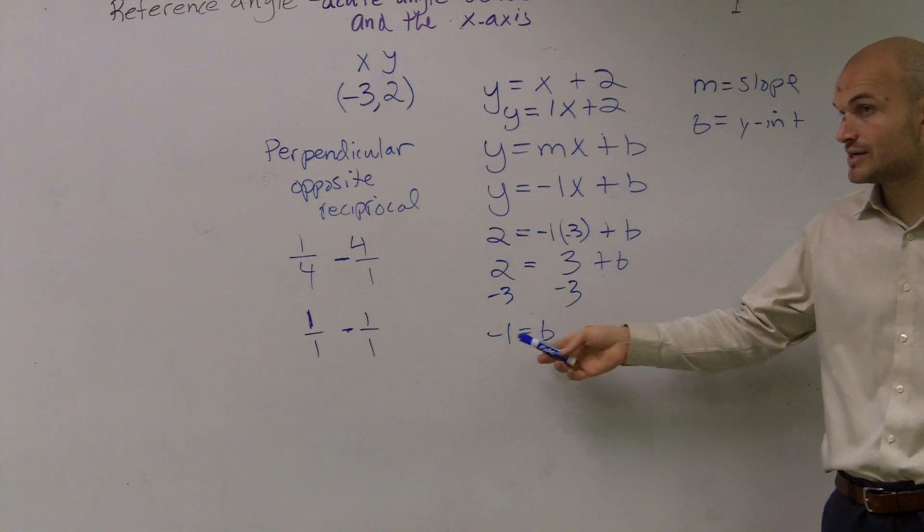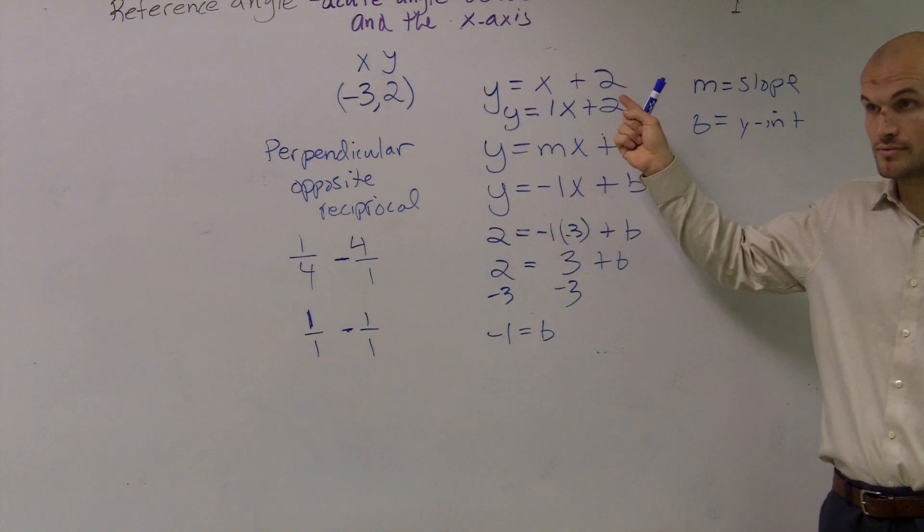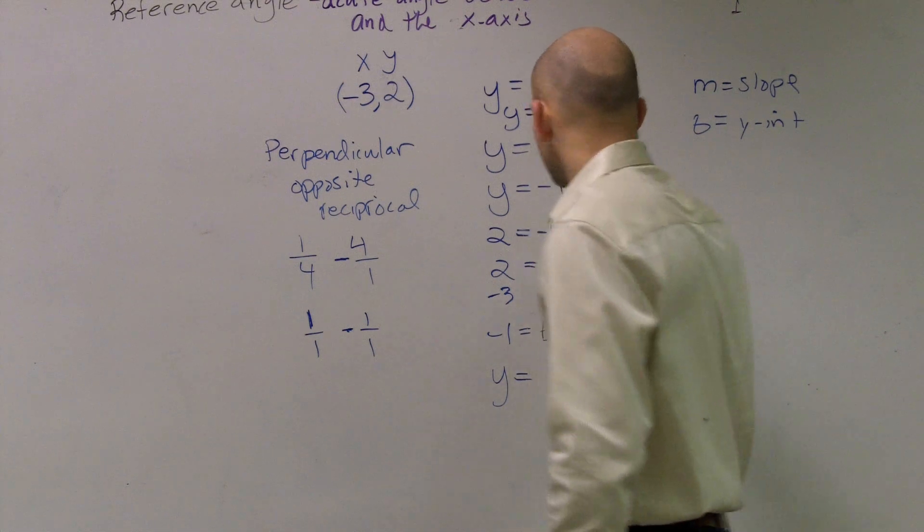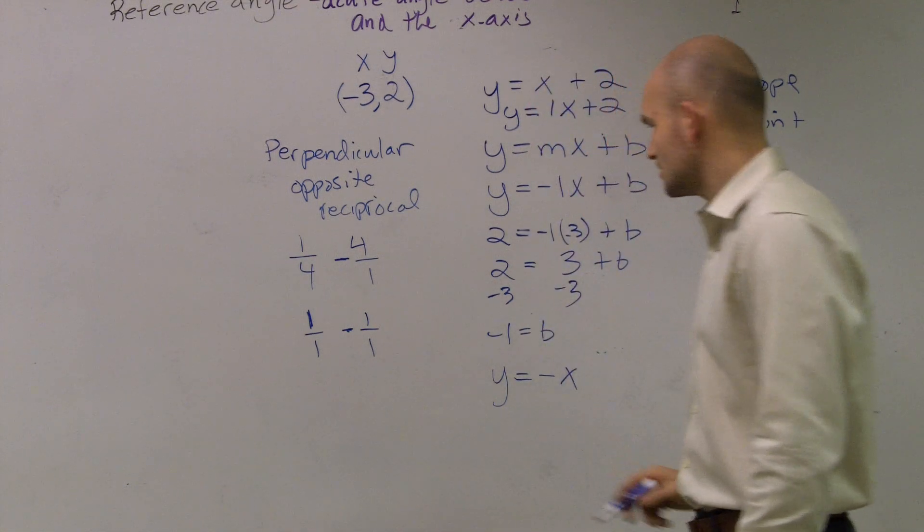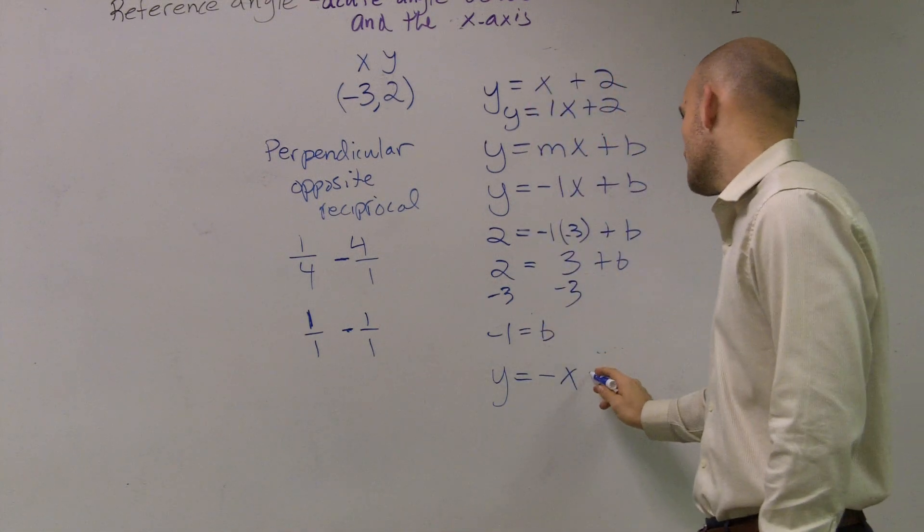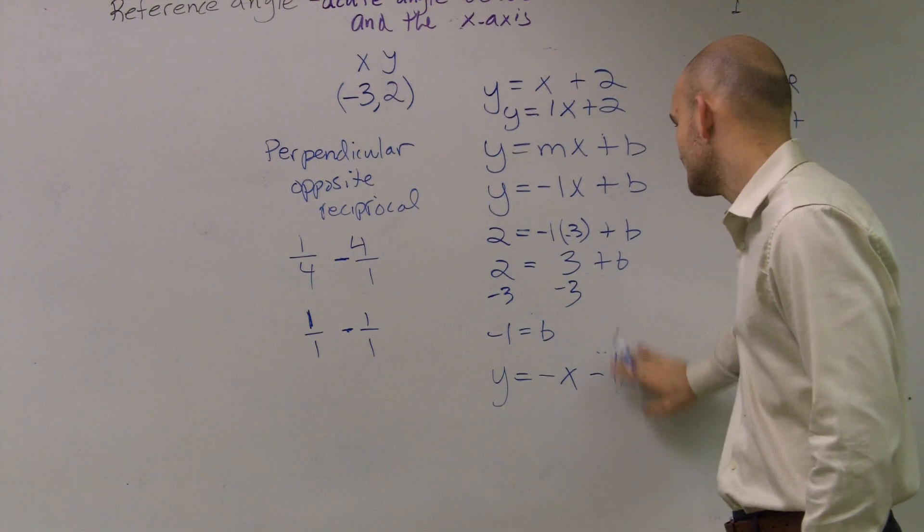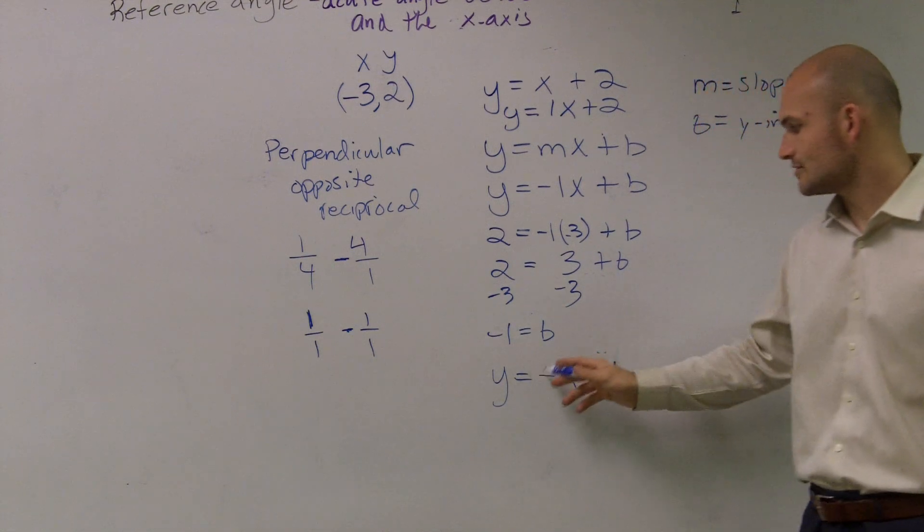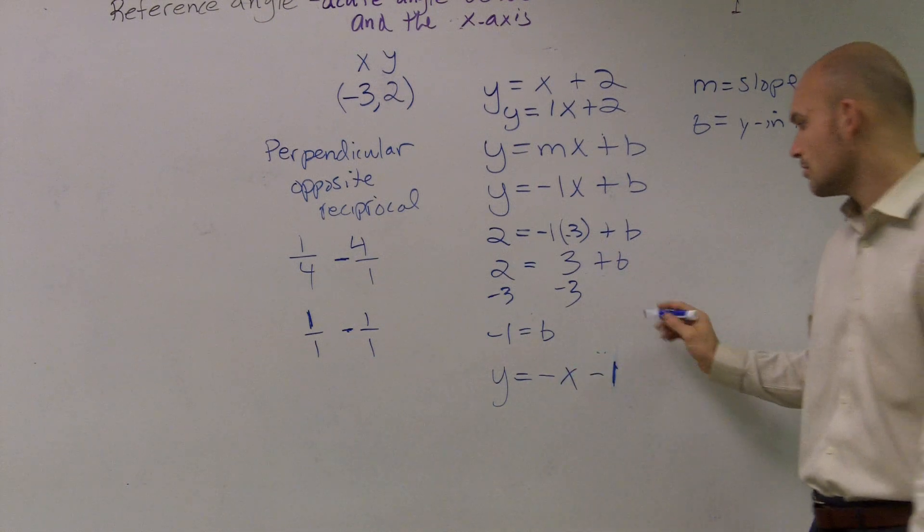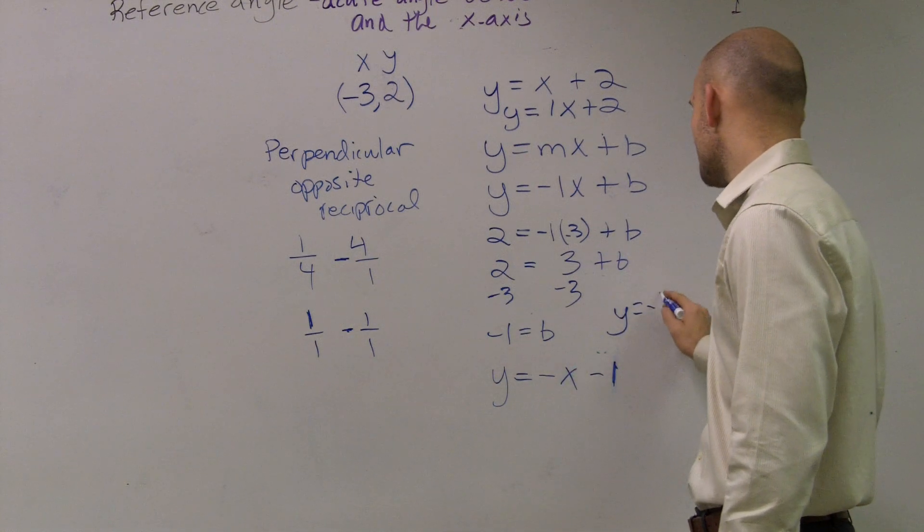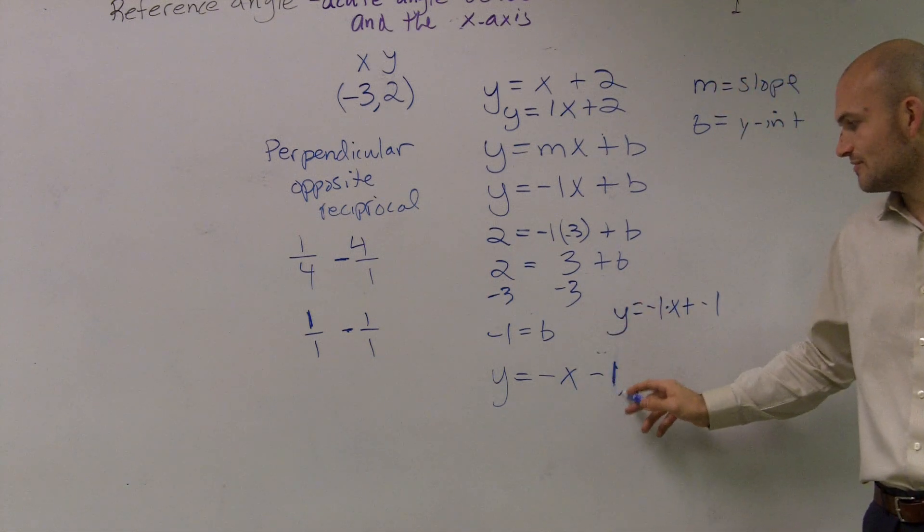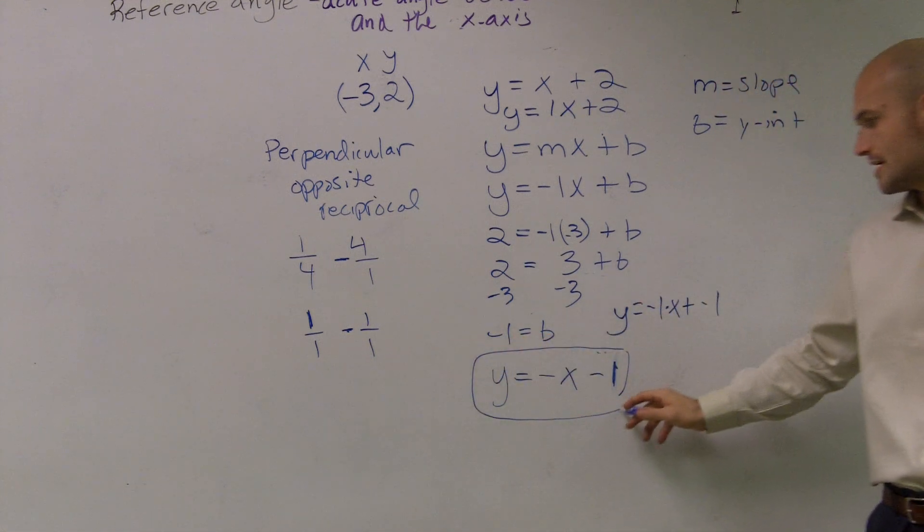Do you guys see why my y-intercept is negative one and it's not two? So therefore, my final equation is y equals my slope, which is negative one times x minus one. So y equals negative x minus one. Or if you want to write it into slope-intercept form, y equals negative one times x plus negative one.